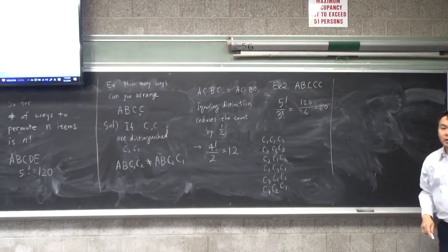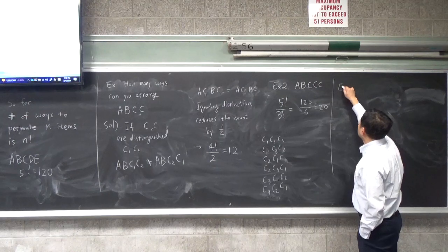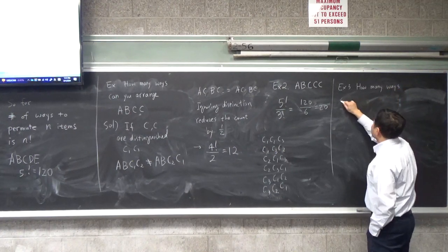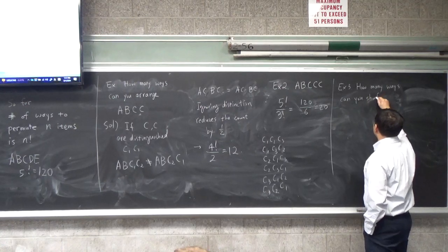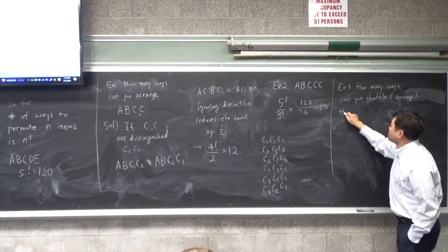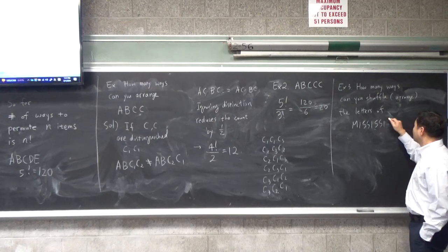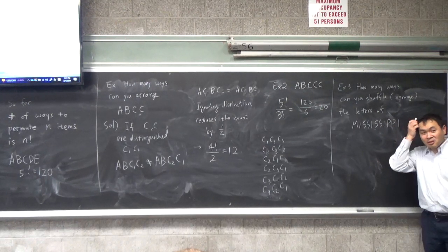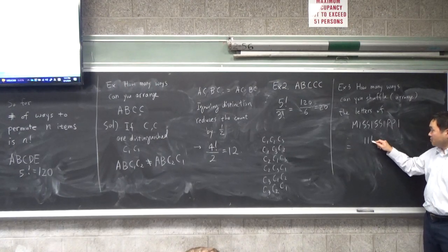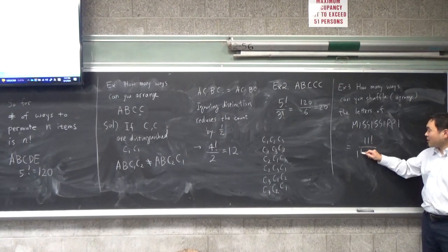Using this idea, you can answer questions like how many ways can you shuffle or rearrange the letters of Mississippi. So let's count the letters: one, two, three, four, five, six, seven, eight, nine, ten, eleven. M appears once, so you divide by one factorial — it doesn't do anything. I appears how many times? Four times. So what do you divide by? Four factorial.